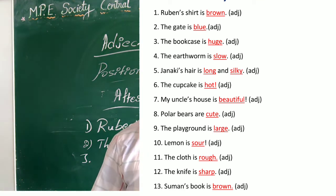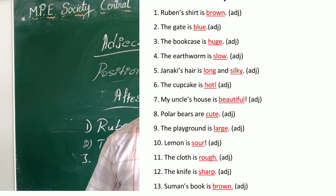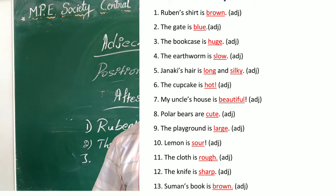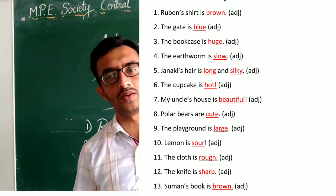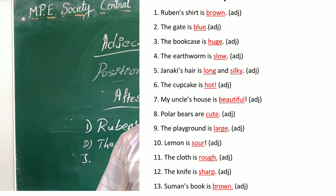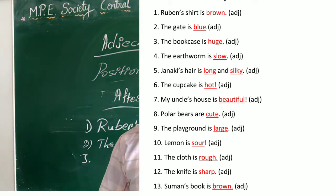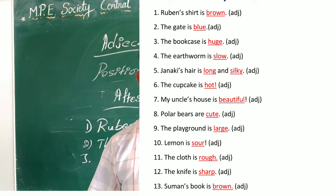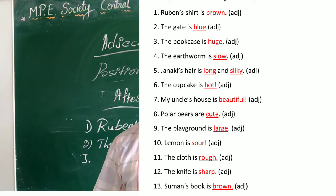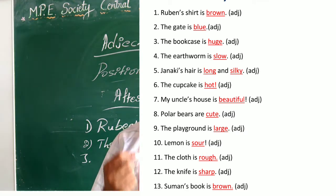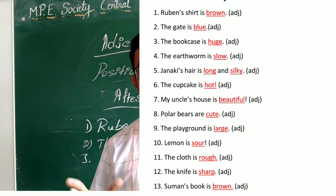Tenth sentence: 'Lemon is sour.' Sour is an adjective; we use it after the verb, so underline it. Eleventh: 'The cloth is rough.' Rough is an adjective used after the verb. Twelfth: 'The knife is sharp.' Sharp is an adjective used after the verb 'is.' Thirteenth: 'Summa's book is brown.' Brown is an adjective. We are using it after the verb. All these sentences use the adjectives after the verb, so underline them.